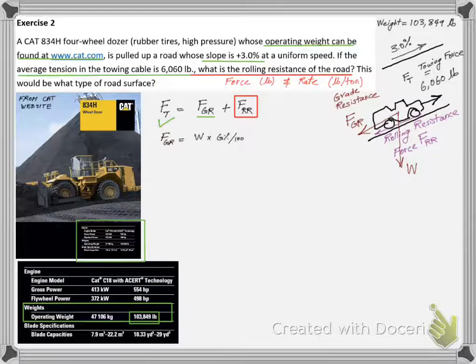We can calculate FGR by using its relation with the weight that we derived in the lecture. We insert the given values and find FGR to equal 3,115 pounds.